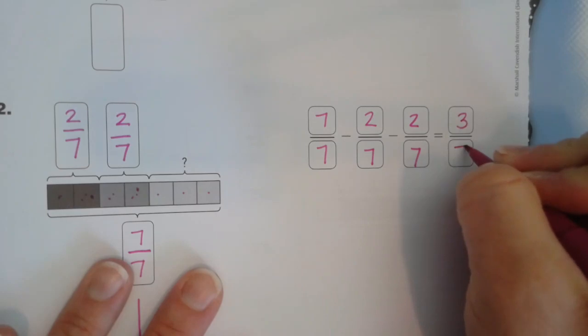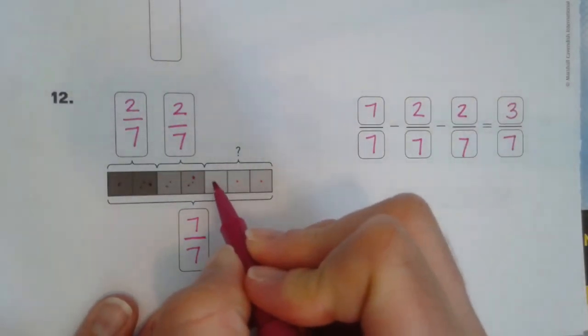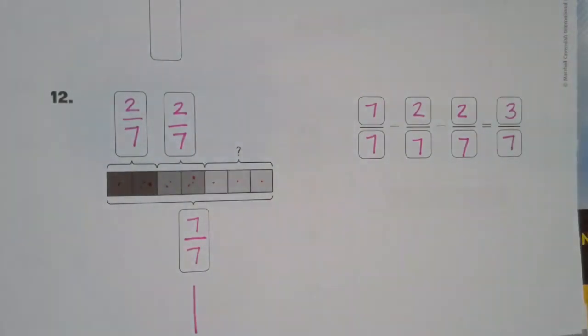So, we are left with 3 sevenths. And that's how you can easily see this question mark here shows that there are 3 sevenths left. Hopefully, that helps.